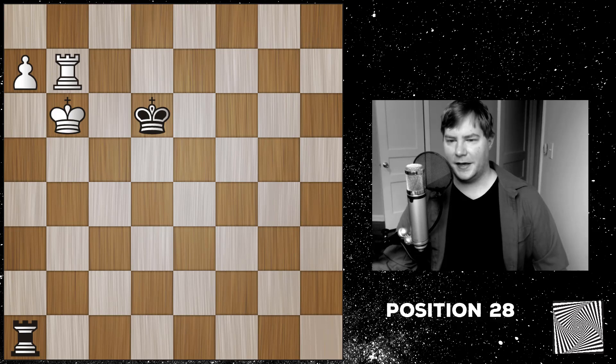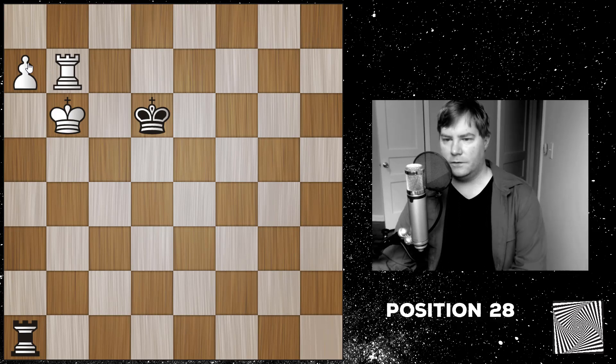So white's basic plan is to march his king up to the eighth rank, and try to get his rook in front of his king, and then queen this pawn. And because it's white to move, he has just one move to do it. And that move is just to move the rook out of the way. Basically, any move along here would have worked,